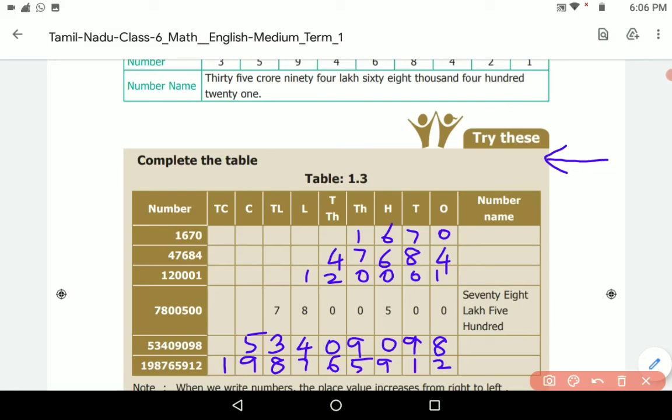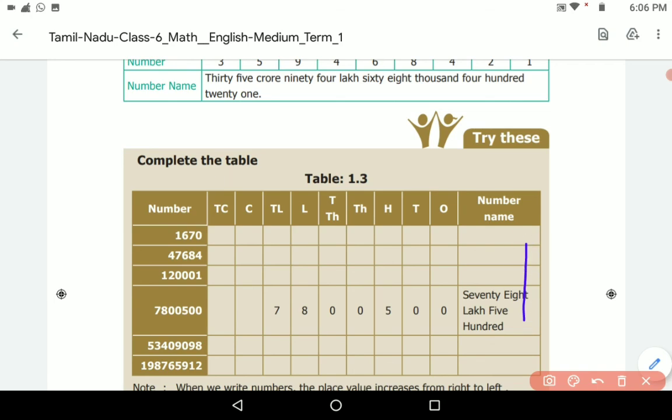So understood, guys? Fine. So when we write the numbers, the place value increases from right to left. I hope you all understand this topic. Meet you in another video. Thank you, children. Bye bye.